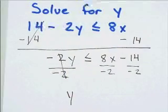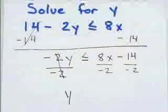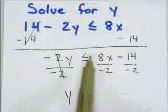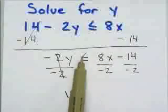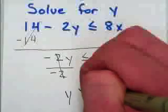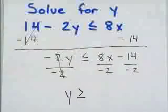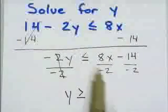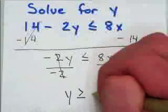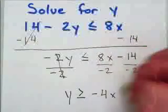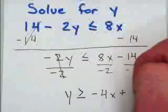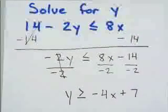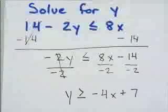And when I divide or multiply by a negative, and in this case I divided, I have to switch the direction of the inequality symbol. So this less than or equal to will turn into a greater than or equal to when I divided by that negative. And then I just go ahead, 8 divided by negative 2, negative 4x. Negative 14 divided by a negative 2 is a positive 7. So I'm left with y is greater than or equal to negative 4x plus 7.